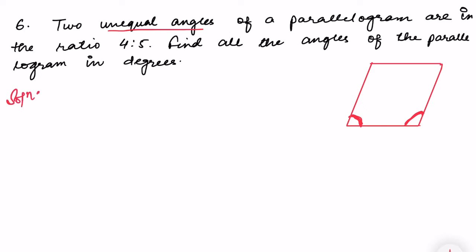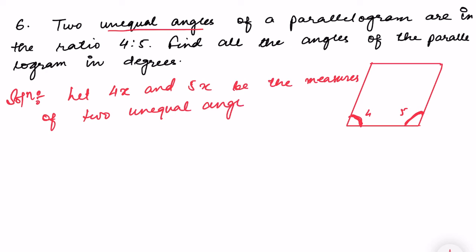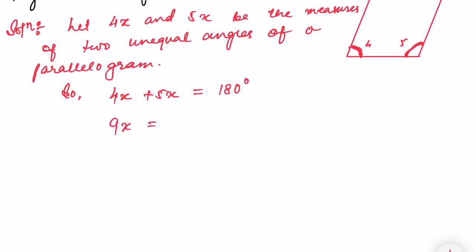For the solution, since the ratio is 4 to 5, let us say one angle is 4x and the other is 5x. These two angles of a parallelogram together will always be equal to 180 degrees, since they are co-interior angles. So 4x plus 5x equals 180 degrees.